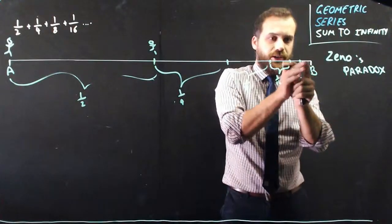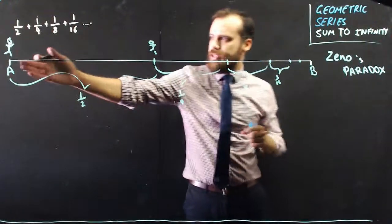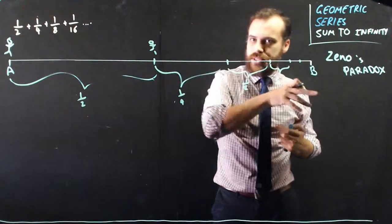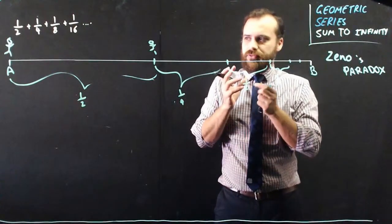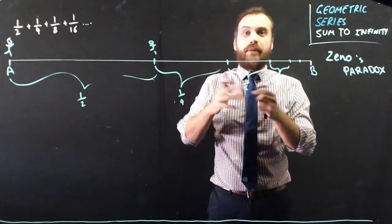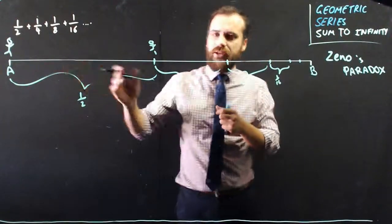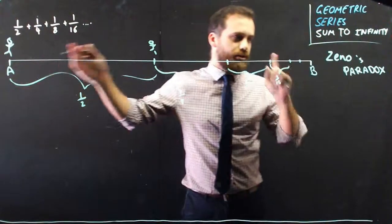Half it, half it, half it, closer and closer and closer. If he needs to pass through an infinite number of points, and there's only a finite amount of time in the universe, then he'll never be able to get from here to here.